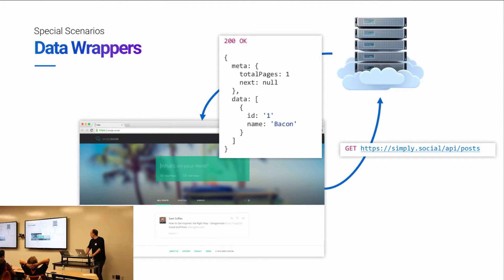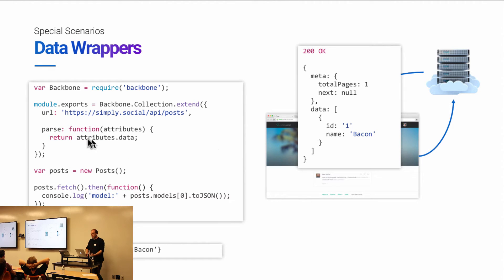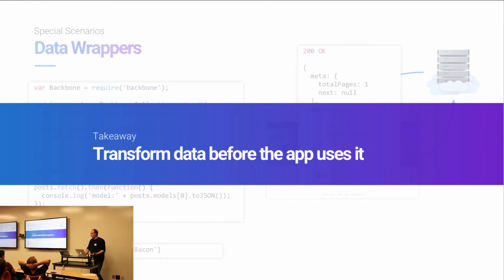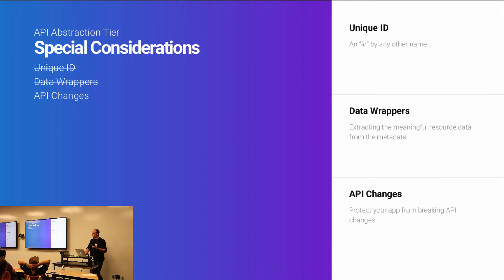The second consideration is that APIs, especially more expressive ones, typically wrap your data with additional context and information. You can't immediately use that response in your application — you have to extract the part you care about. Backbone's parse method is really useful here. You can say: the data that comes back — just reach into attributes.data, that's where the collection of information is. This is also useful for transforming data, like casting date timestamps to moment objects to make them easier to work with.